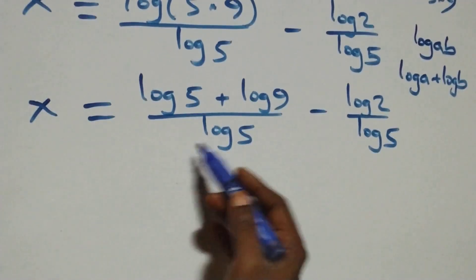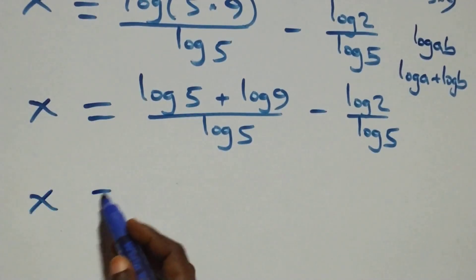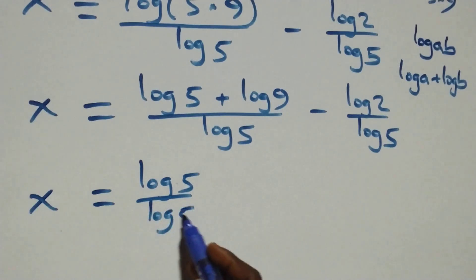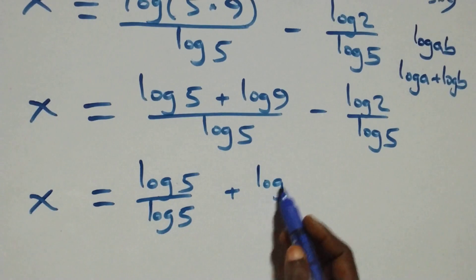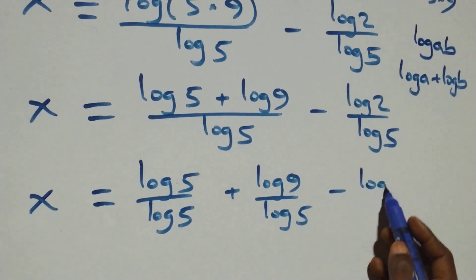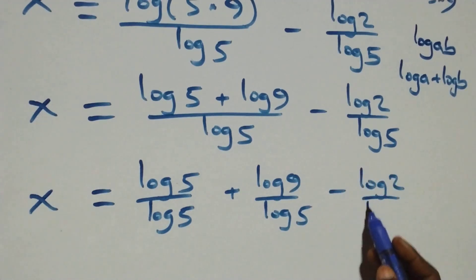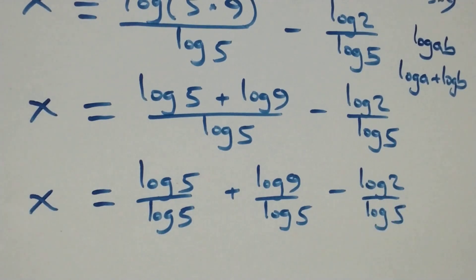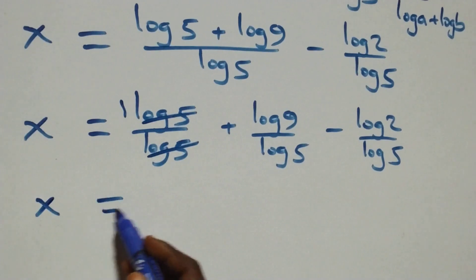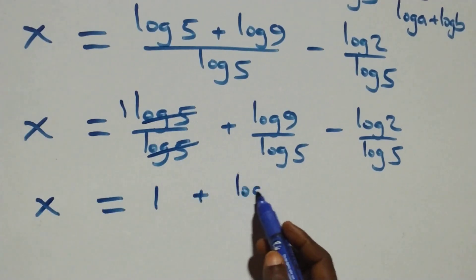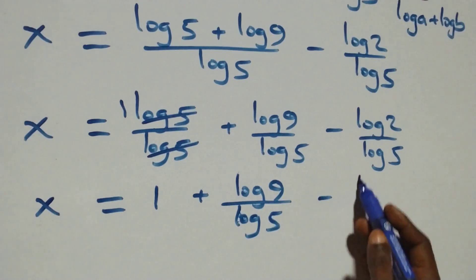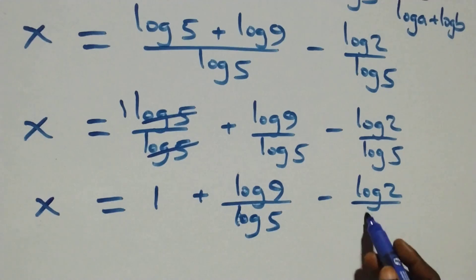Here we separate these into two fractions, and we have x equals to log 5 over log 5, plus log 9 over log 5, minus log 2 over log 5. Log 5 over log 5 cancels to give 1, so x equals to 1 plus log 9 over log 5, minus log 2 over log 5.